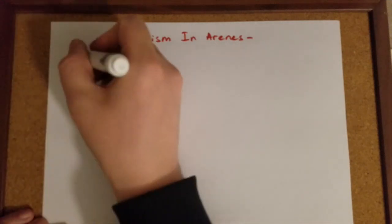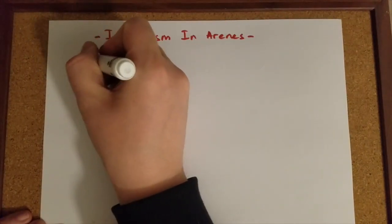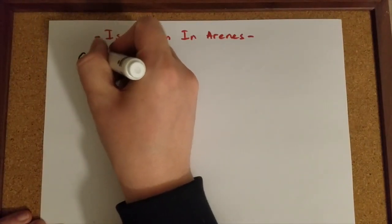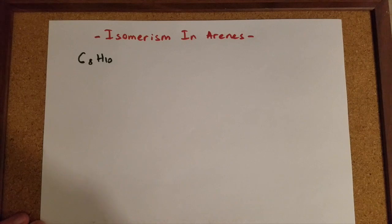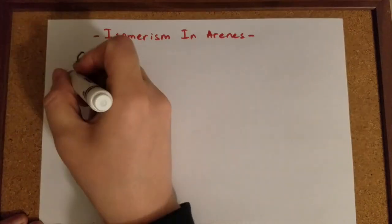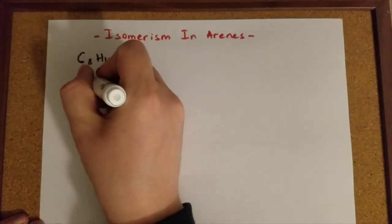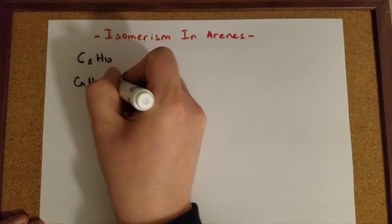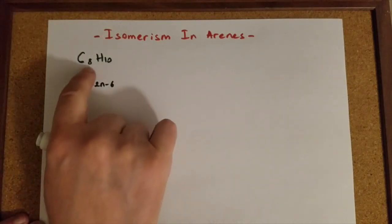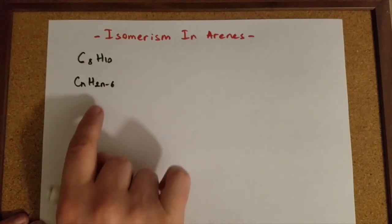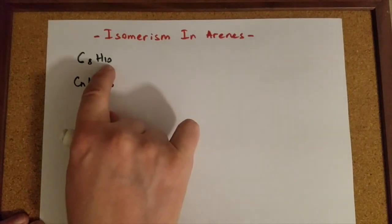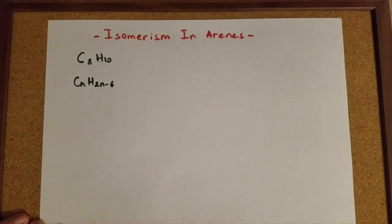Let's assume that we were given a compound whose formula is C8H10. First of all, you need to be sure that this compound is an arene or not. Remember that the general formula of arenes was CnH2n minus 6, and number of carbons in here is 8. 2 times 8 is 16, minus 6, it is 10. So this compound is an aromatic hydrocarbon.